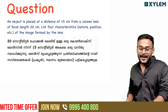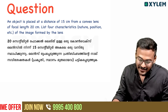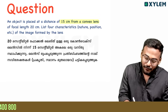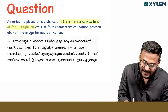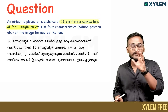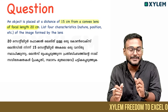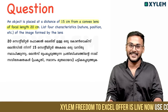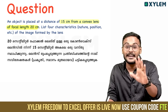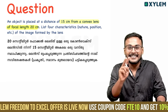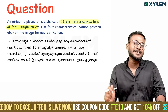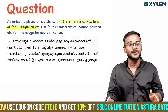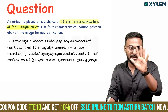An object is placed at a distance of 15cm from a convex lens of focal length 20cm. We are going to take a convex lens with an object at 15cm and focal length of 20cm. We are going to take a close look and find the image distance.